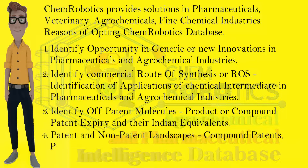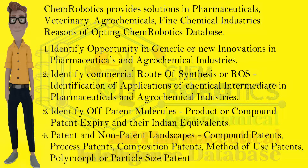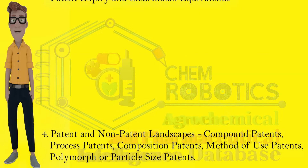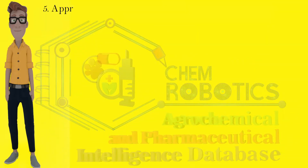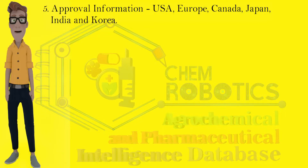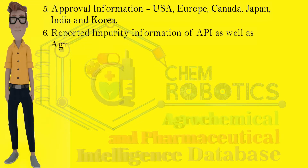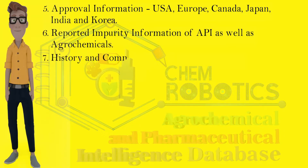Fourth, patent and non-patent landscapes — compound patents, process patents, composition patents, method of use patents, polymorph or particle size patents. Fifth, approval information for USA, Europe, Canada, Japan, India, and Korea.